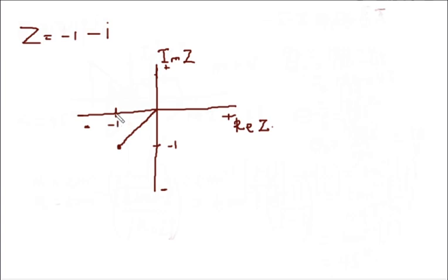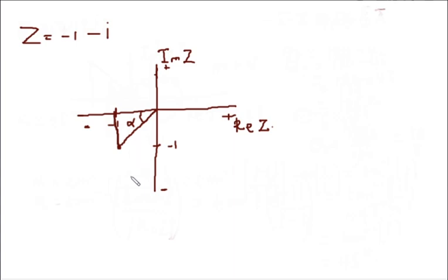We draw the intersection point. The angle that this makes with the x-axis is alpha. Alpha should be found next when you are finding the principal argument.